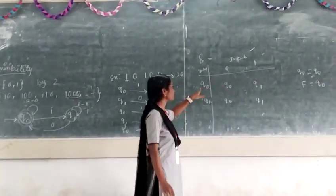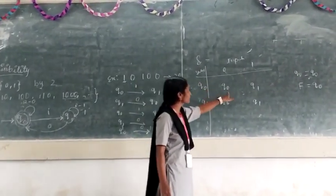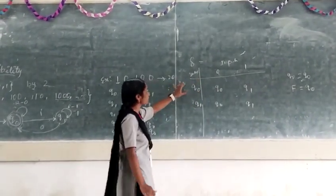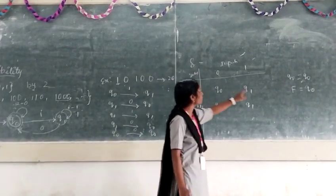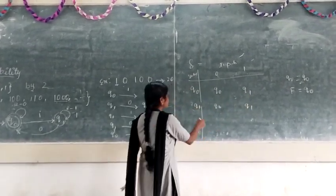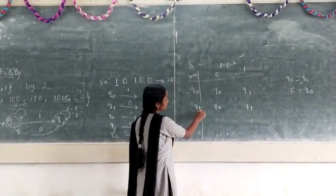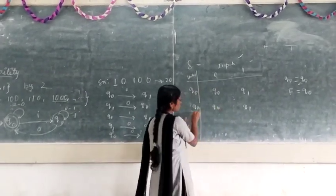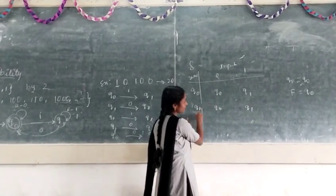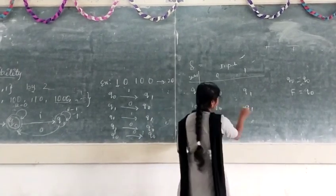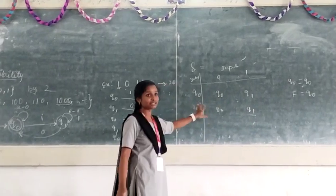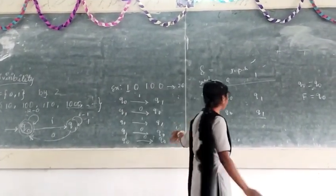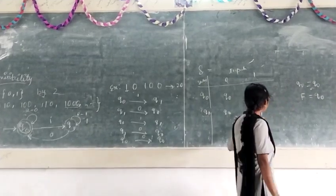If we give zero to Q0 state, it will remain in the same state. If we give one to Q0 state, then it will move to Q1 state. If we give zero to Q1, it will move to Q0. If we give one to Q1, it remains in Q1. This is the transition table for divisibility by 2 for our DFA and DFA is represented by five tuples.